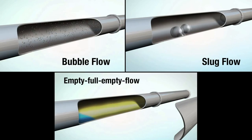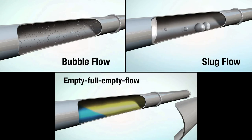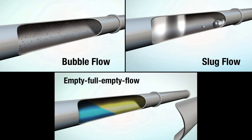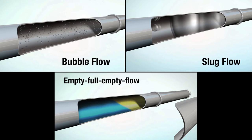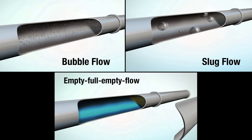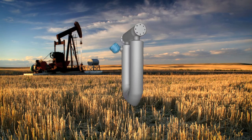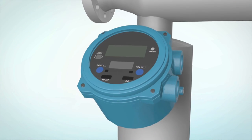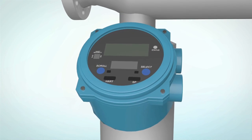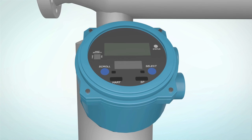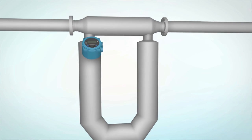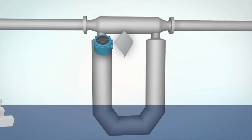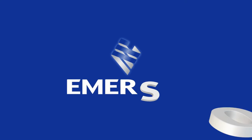Today we have illustrated three different types of entrained gas in fluid applications: bubble flow, slug flow, and empty-full-empty flow. Micromotion Elite meters employ sophisticated sensor and electronics design and work effectively in many entrained gas applications. Micromotion Elite!